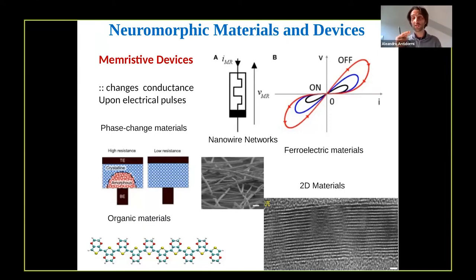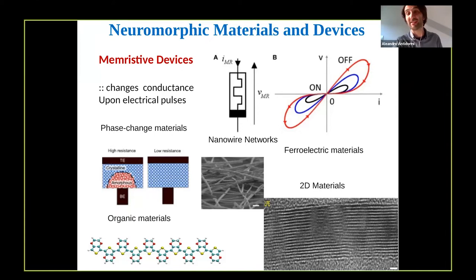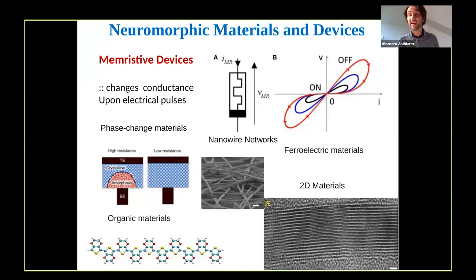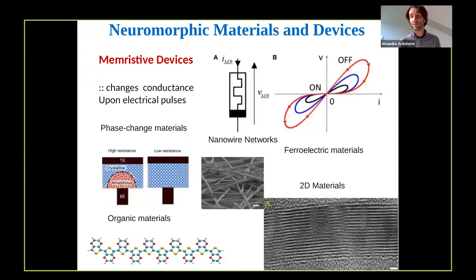A memristor is a two-terminal device that can change its conductance or resistance depending on the value of the voltage applied across it. The most basic memristor has two levels of resistance — a high level and a low level — and we can switch between the two in a reversible manner. This translates into current-voltage characteristics characterized by high hysteresis. From a practical point of view, there have been many ways to implement a memristor physically, such as using phase change materials, which can switch from an amorphous to a crystalline morphology when a voltage is applied.